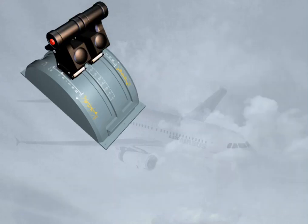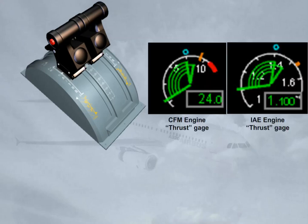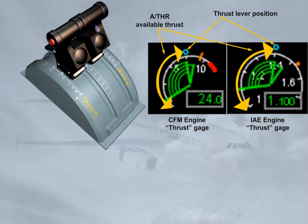When autothrust is on, the thrust lever position determines the maximum thrust which can be commanded by the autothrust, for example to accelerate in speed mode. On the thrust gauge, which will be discussed in the engine chapter, the thrust lever position is indicated by a symbol. It materializes the maximum thrust available for the autothrust in normal operation.